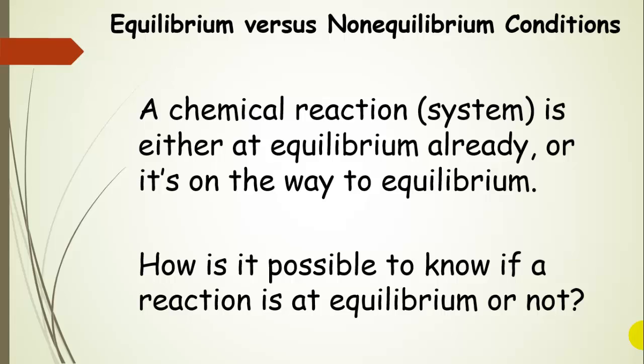The central concept in all of this is that a chemical reaction system is either at equilibrium already or it's on its way to equilibrium. So we want to figure out how to determine if a reaction is at equilibrium or not.